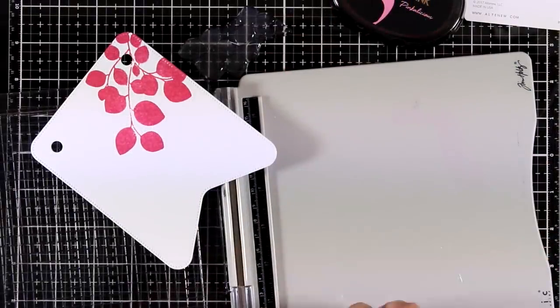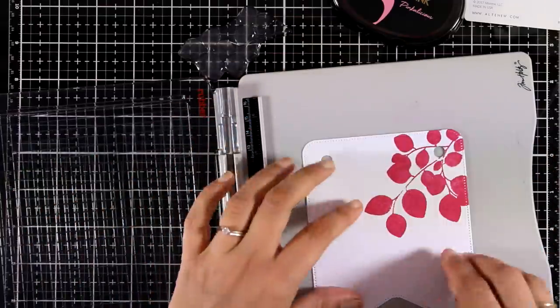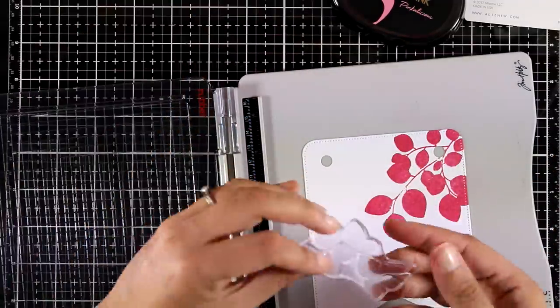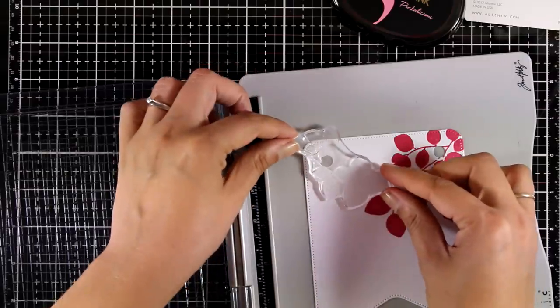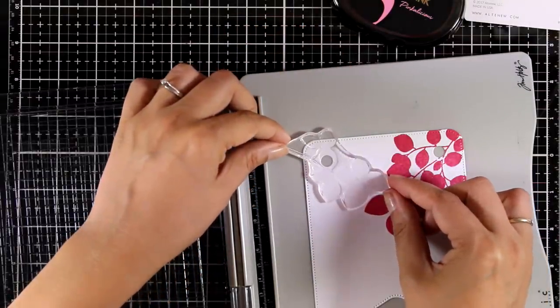And here is a trick I like to do. Instead of using my magnets, I like to apply some repositionable tape on top of my platform, and this way I don't have to use the magnets and they don't get in my way. Now I'm going to position the second branch.